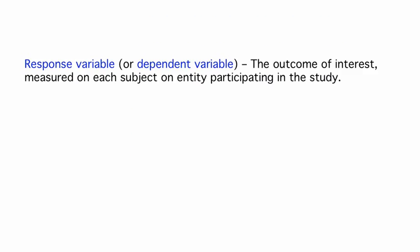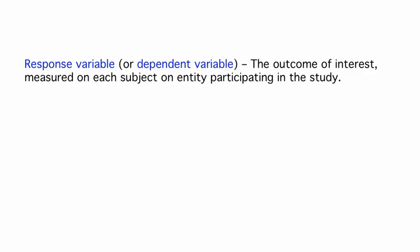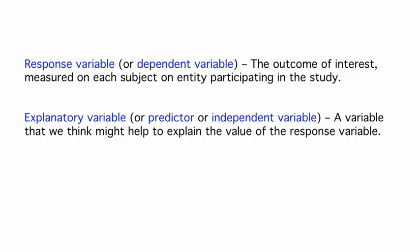It is sometimes called a dependent variable, because we are typically interested in how it depends on the values of the other variables, which are the explanatory variables. Explanatory variables, or predictors, or independent variables, are variables that we believe affect the response.